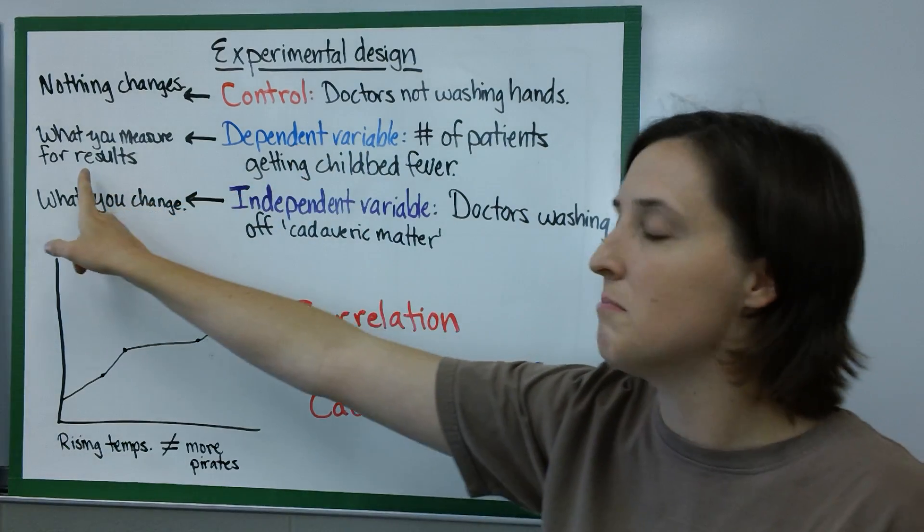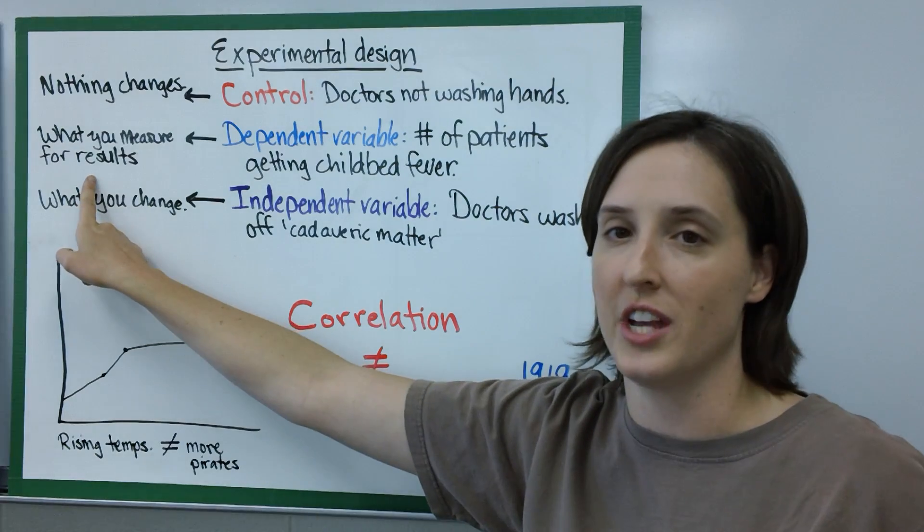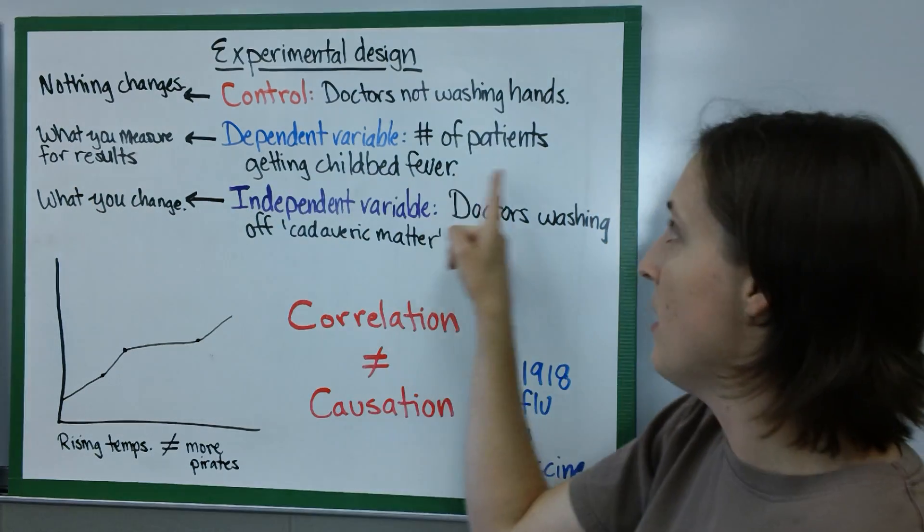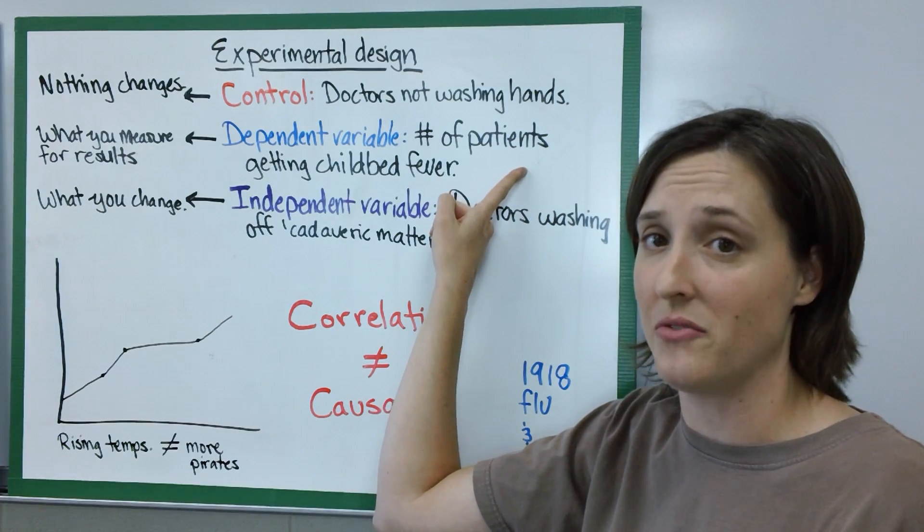The dependent variable is what you measure for results. What is changing in response to the hand washing? It's the number of patients who are getting or not getting childbed fever.